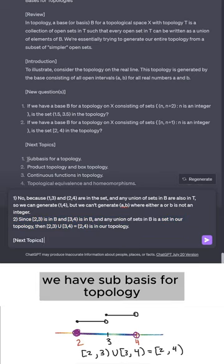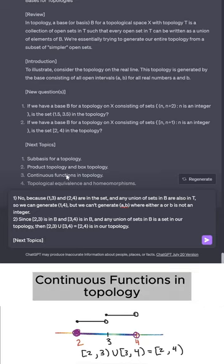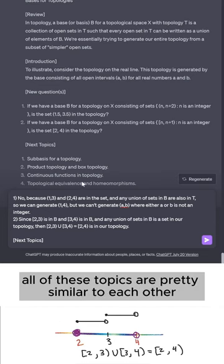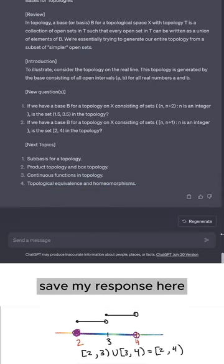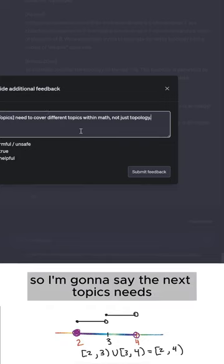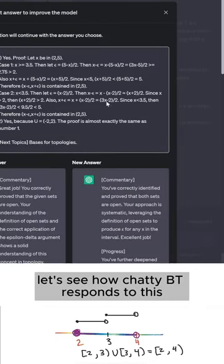All right, for our next topics, we have sub-basis for a topology, product topology and box topology, continuous functions in topology, and topological equivalents and homeomorphisms. Now, all of these topics are pretty similar to each other. And for that reason, I'm actually going to save my response here and hit the thumbs down button and provide feedback. So I'm going to say the next topics needs to cover different topics within math, not just topology. Let's see how ChatGPT responds to this.